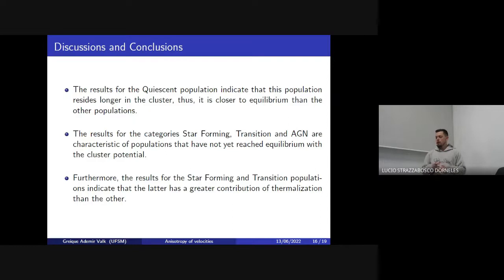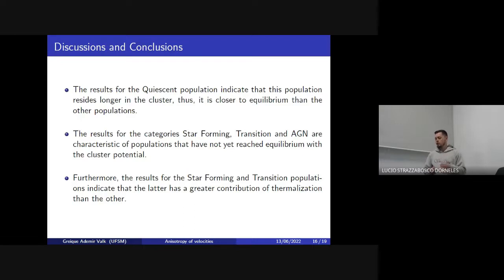The main conclusions of my work are that the quiescent population has more isotropic orbits and is more concentrated in the central regions. This indicates that this population has resided for a longer time in the clusters. Because of this, it has more isotropic orbits and is closer to equilibrium than the other populations. Furthermore, the results for the star-forming, transition, and AGN populations indicate that these three populations have more radial orbits.